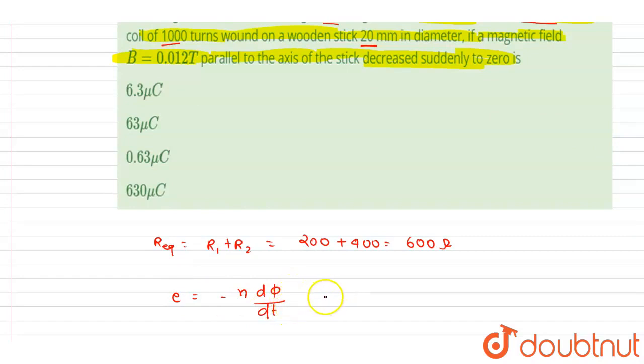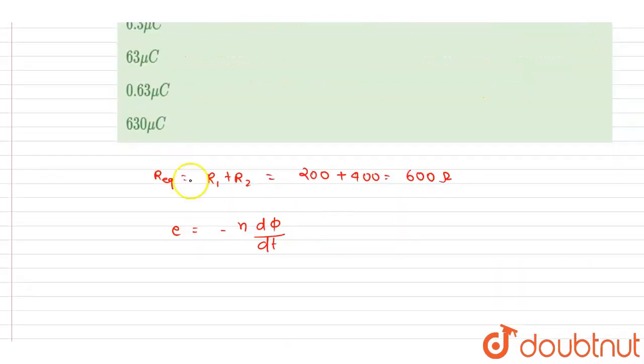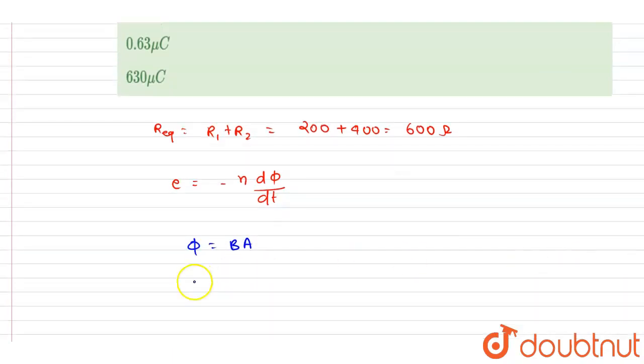Here the number of turns is given. And if I talk about the flux, if you see the field is parallel to the area vector. Magnetic field parallel to the axis, and axis is along the area vector. Both are parallel, so I can write down the flux equals simply B into A, since they are parallel.